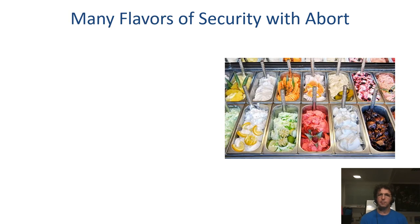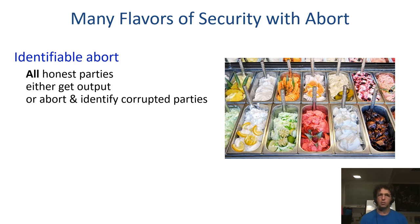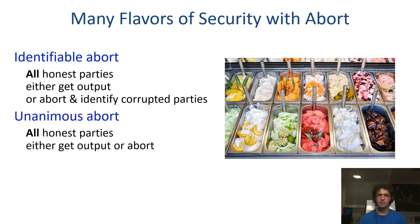Security with abort actually comes in many flavors, where the strongest security notion is called security with identifiable abort. In that case, it is guaranteed that either all honest parties get the output from the computation, or if the adversary attacks and the honest parties abort, they will identify at least one of the corrupted parties. A weaker version is security with unanimous abort, where either all honest parties get the output, or all honest parties abort, but they don't necessarily identify one of the corrupted parties.